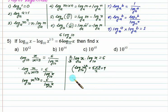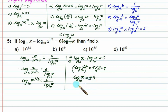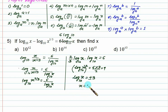Since [log(x) to base 10]² = 9, we get log(x) to base 10 = ±3 due to the square root. Hence x = 10^(±3), and choice D is the correct answer.